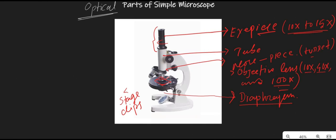The next part is the coarse adjustment knob, located on the side of the microscope. It is used to focus on the specimen at low power — basically it is used to create a clear image of the specimen during initial focusing.